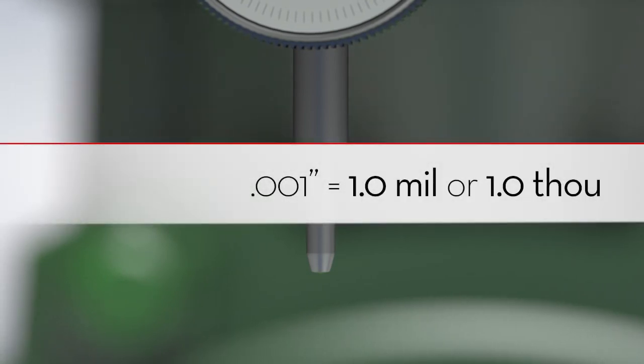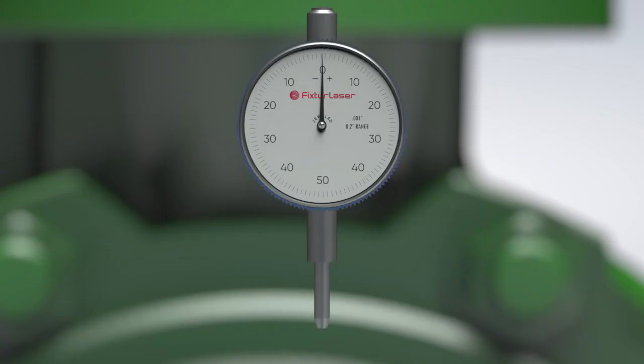In this video, we'll refer to thousandths of an inch as mills, sometimes referred to as thou. The plunger can move in and out. When the plunger is pushed in, the needle rotates clockwise and the results are positive. When the plunger moves out, the dial rotates counterclockwise and the results are negative.